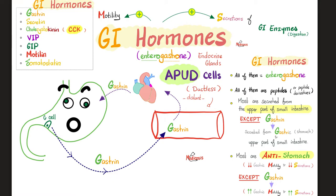Before we go to the intestine, let's talk about your GI hormones, collectively known as enterogastrone, because they came from the intestine and the stomach. All of them are peptides or derivatives of peptides or proteins. All of them are secreted from the upper part of your small intestine, except gastrin, which is secreted from the stomach and the upper part of the small intestine. Most of them are anti-stomach — they inhibit gastric motility and secretion — except gastrin, who is pro-stomach, boosting stomach motility and secretions. Hormones are endocrine, ductless, and not exocrine. Your salivary glands were exocrine, but your GI hormones are endocrine. Your pancreas has both exocrine and endocrine functions.